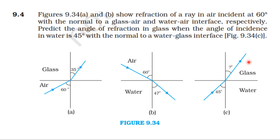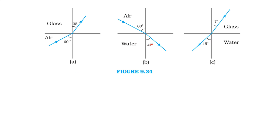Water to glass interface: angle of incidence is 45 degrees, and we need to find the angle of refraction in glass. The formula we use here is Snell's Law: the refractive index times the sine of the angle in a given medium equals a constant. That is, refractive index of the first medium into sine of angle in the first medium equals refractive index of the second medium into sine of angle in the second medium.